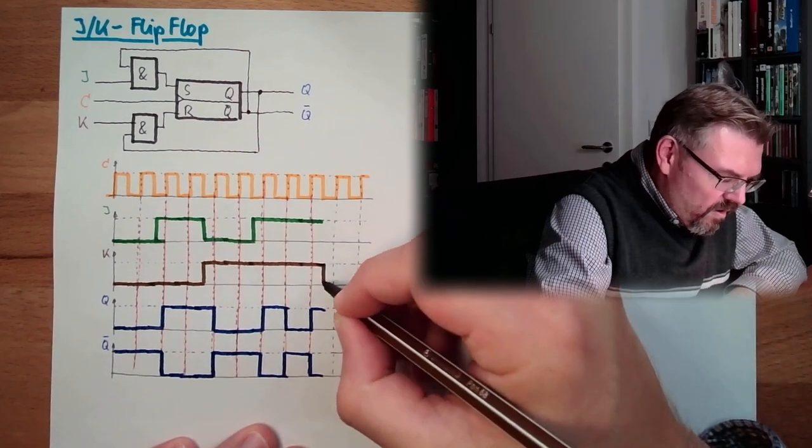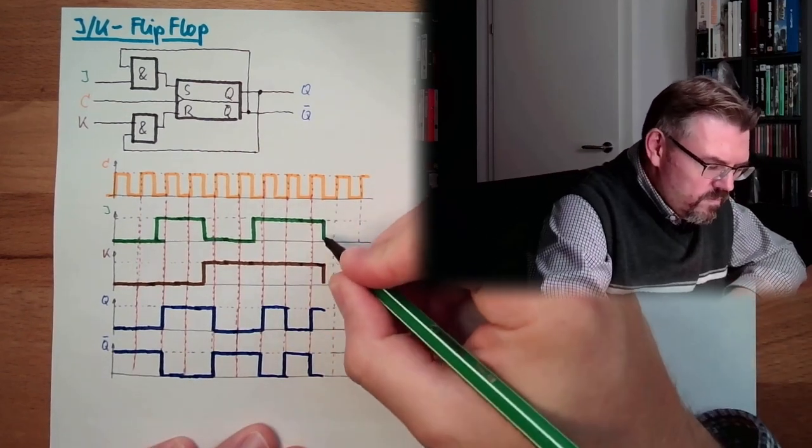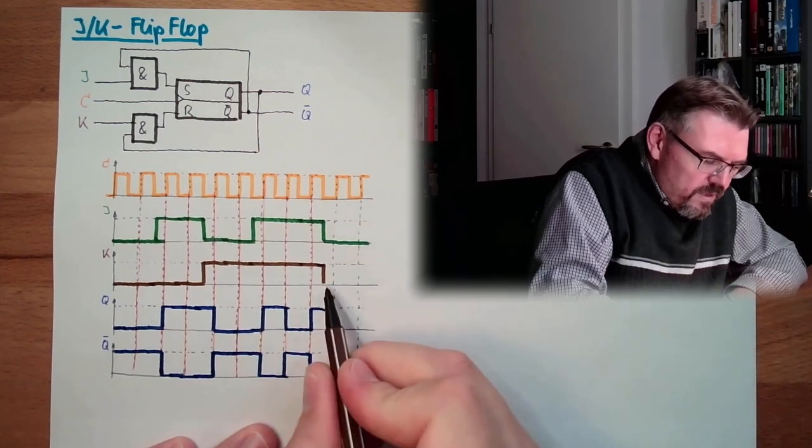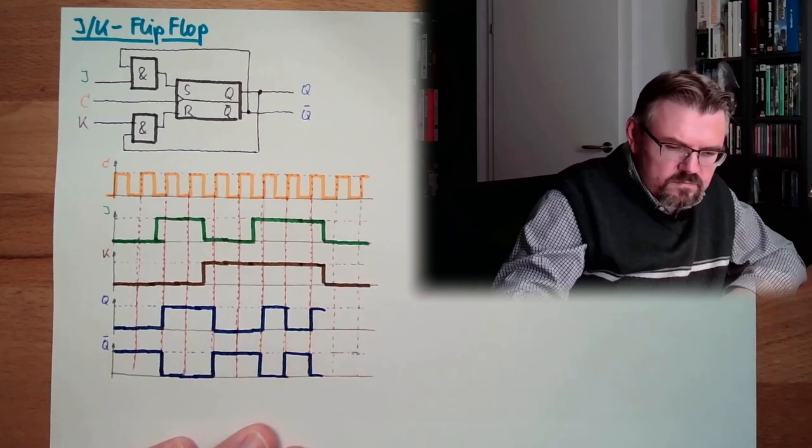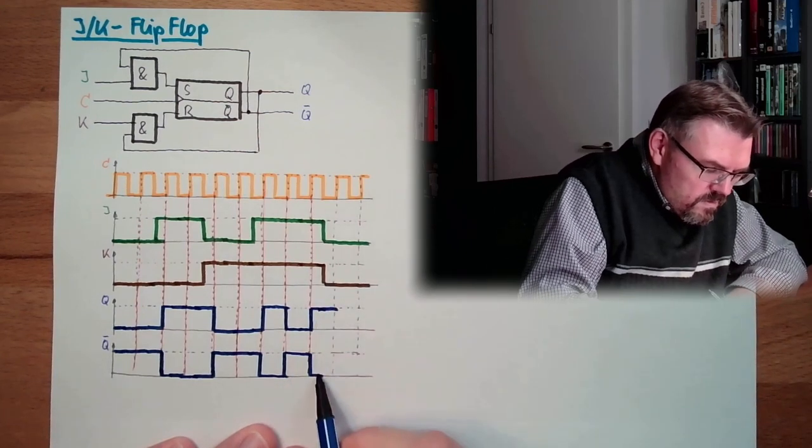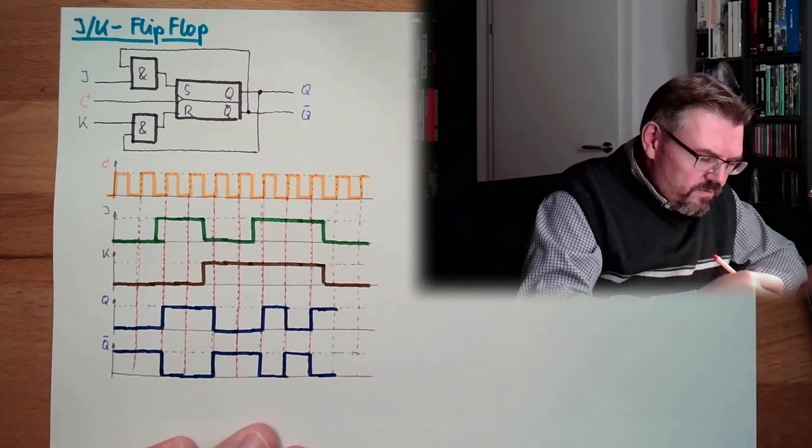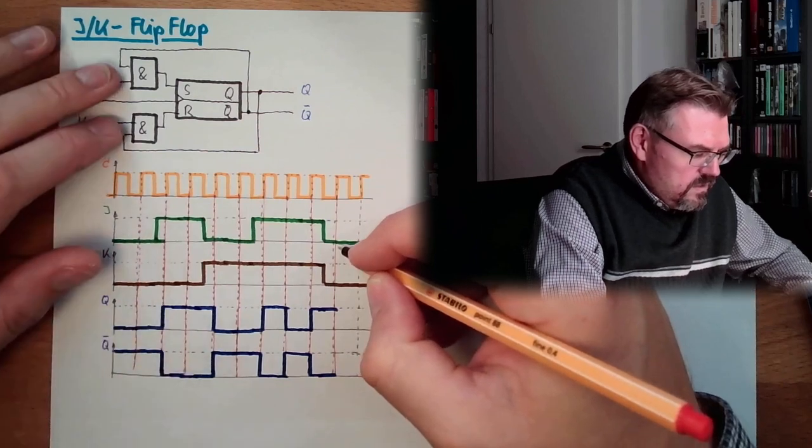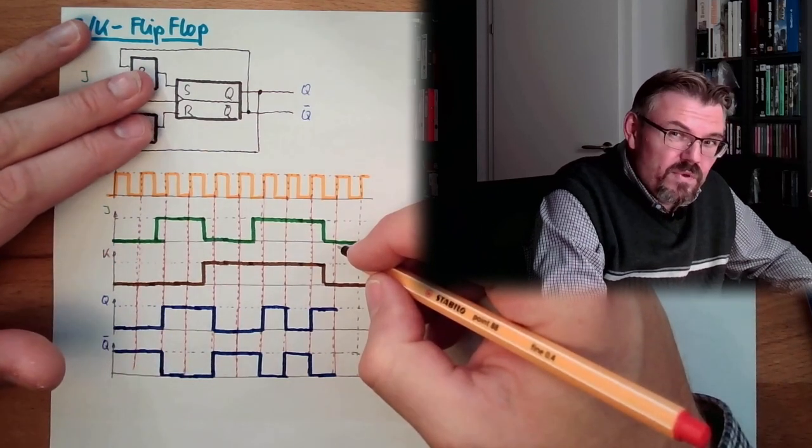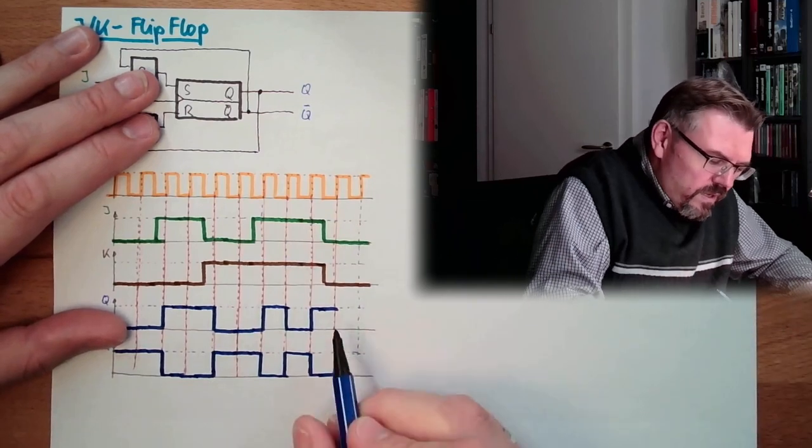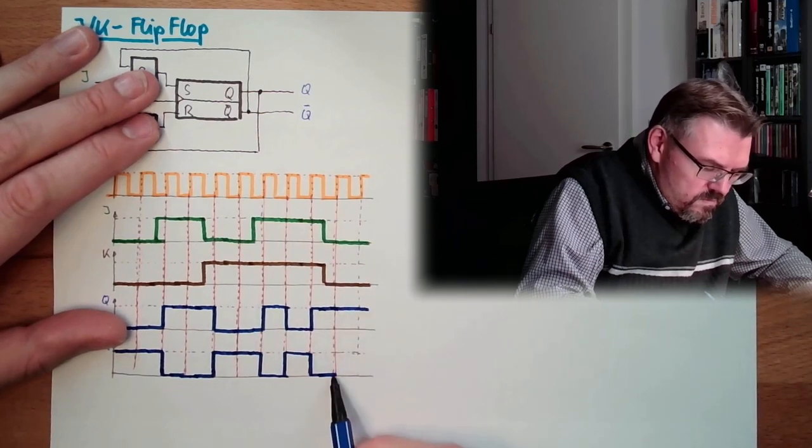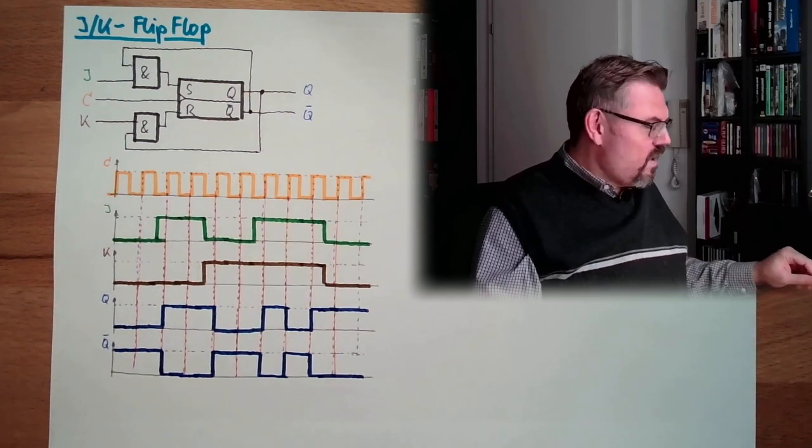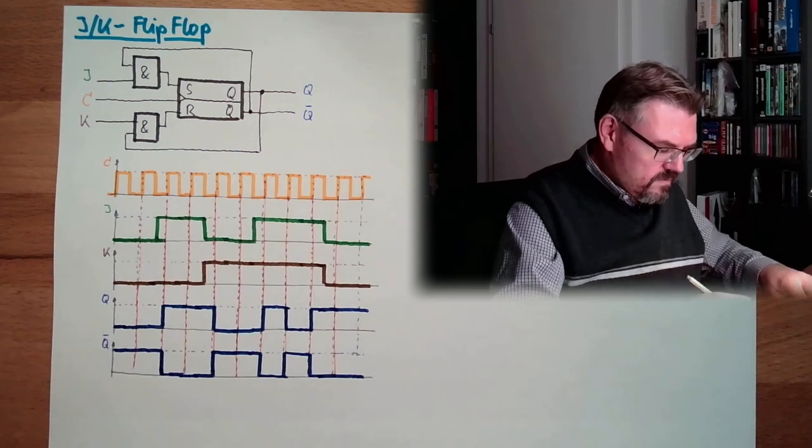And now it's set. Let's see if we now remove both. What is happening here? The rising trigger. Zero, zero. It will neither be S or R. So we will simply stay that way. This is how a JK flip-flop is working.